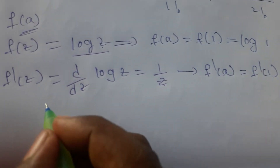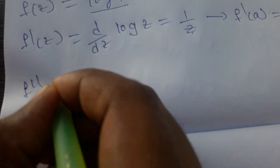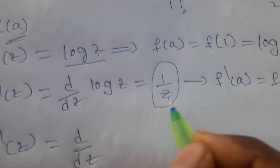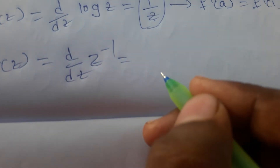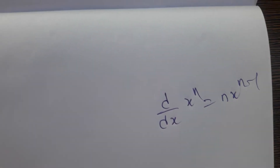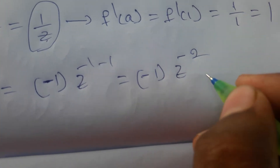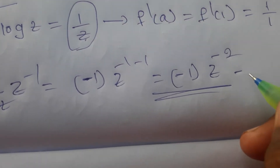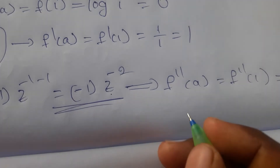To find f''(a): first find f''(z) = d/dz of (1/z) = d/dz of z^(−1). Using the power rule d/dx of x^n = n·x^(n−1), we get −1·z^(−2). So f''(z) = −z^(−2). Then f''(1) means substituting z=1: −1·(1)^(−2) = −1.